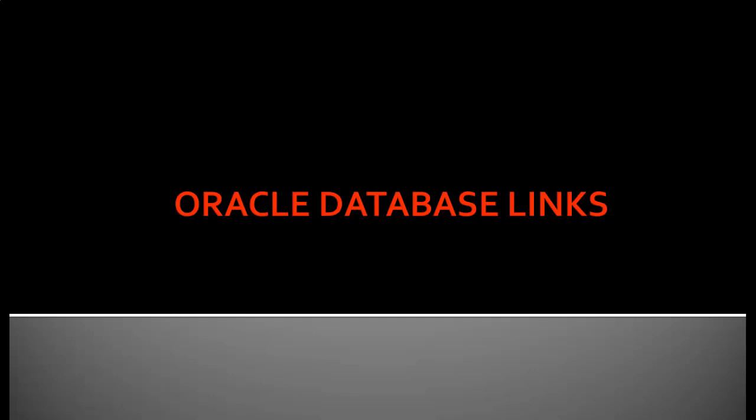The next topic is Oracle Database Links. This is a very useful topic — for example, if you have a production server and a test server, and from the production server you want to query only one table inside the test server, or from the test server you want to query data on the QA server, you can create database links. With database links you can query data from one database to another database.